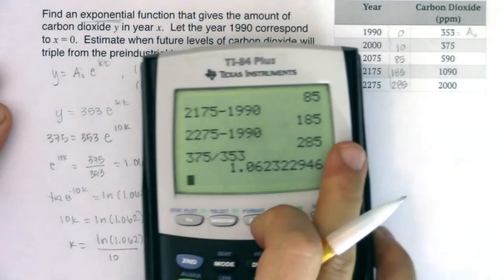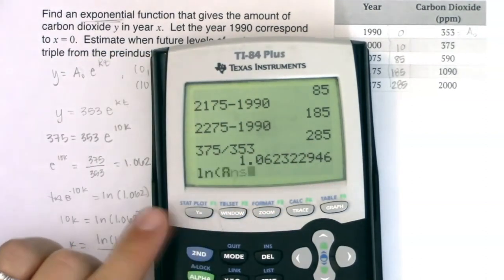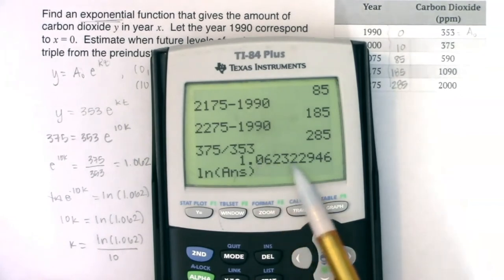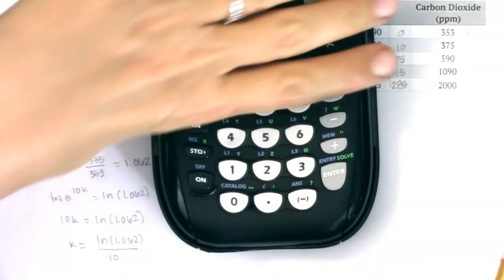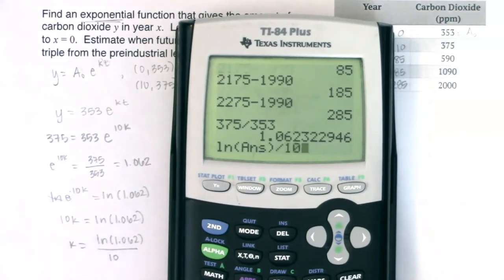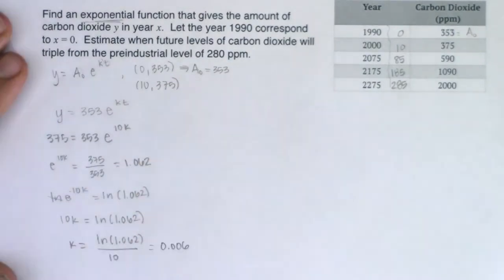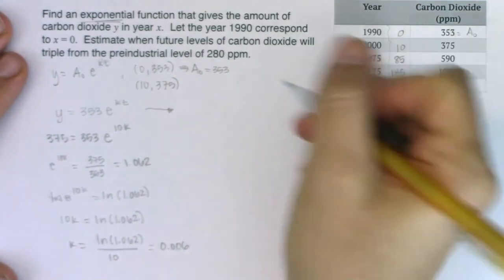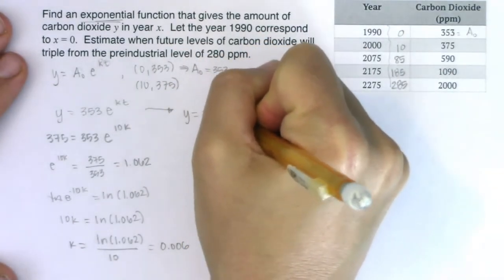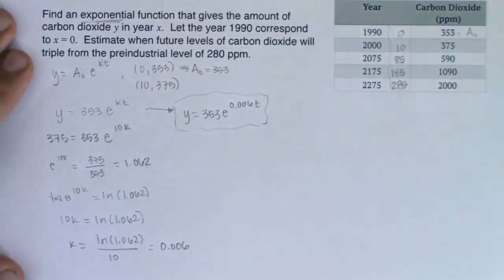I'm going to crunch that number on my calculator. Since I have the 1.062 left in there from before, I'm going to make sure I float all of these decimals. I'm going to take the natural log of that answer, which means my calculator will keep all nine of these decimals. Your answer function lives over your negative symbol, but it's in blue. I'm going to divide that by 10. And let's see what we have, 0.006. So instead of saying y equals 353e^(kt), I now know y is equal to 353e^(0.006t). I have my model.